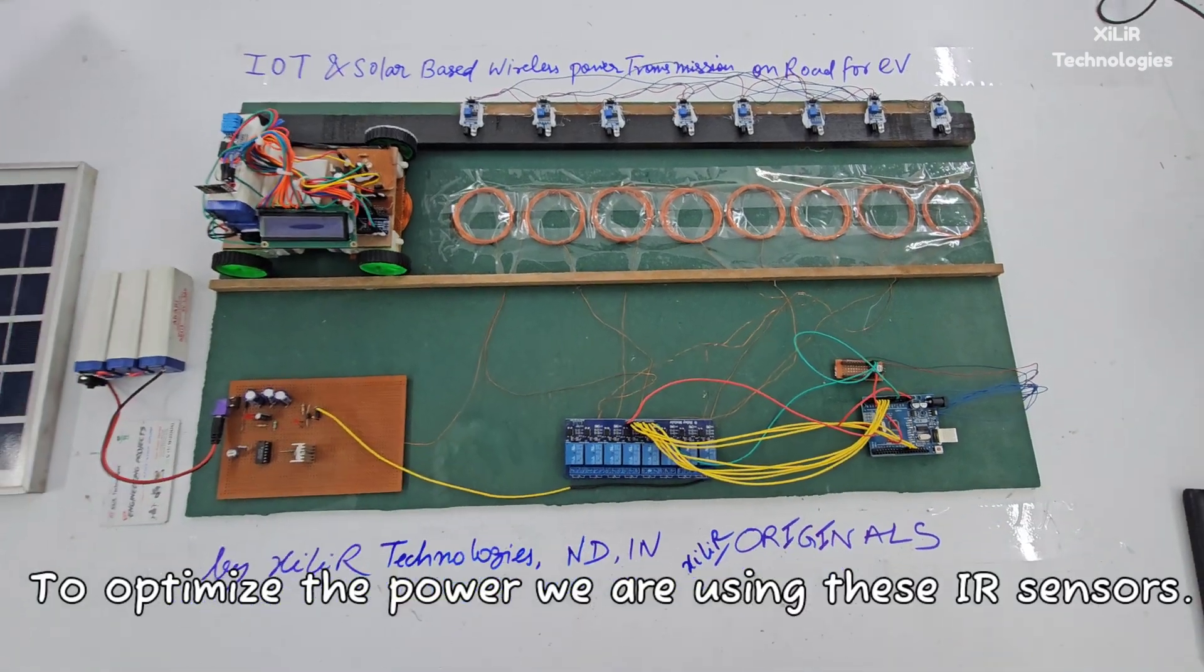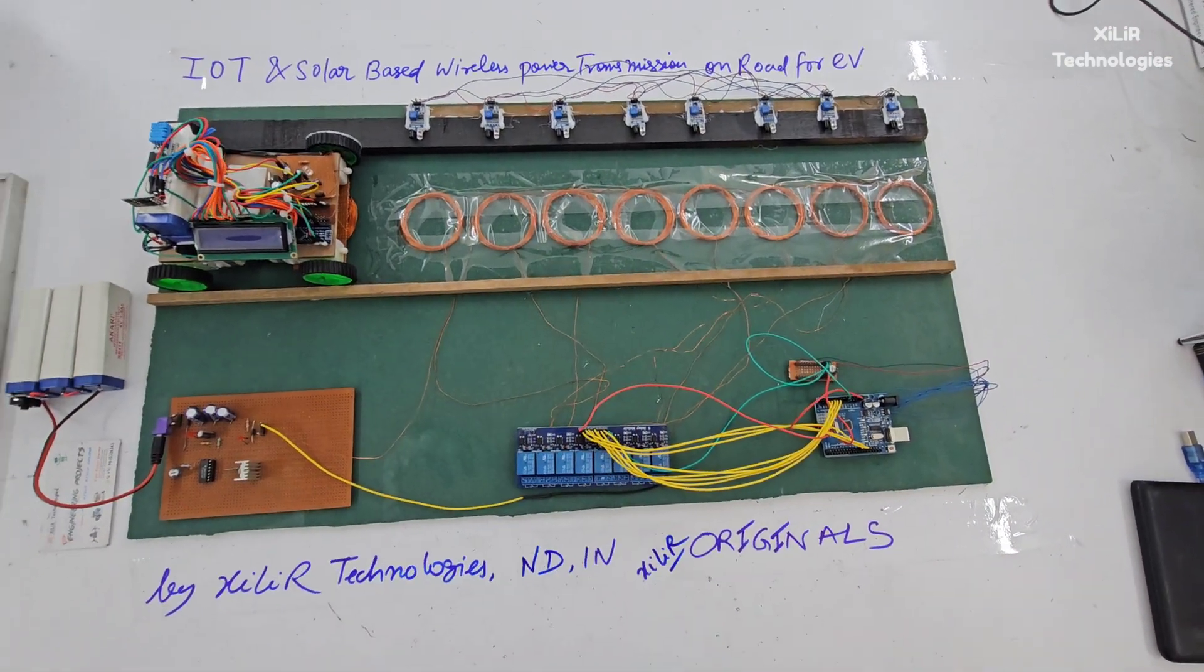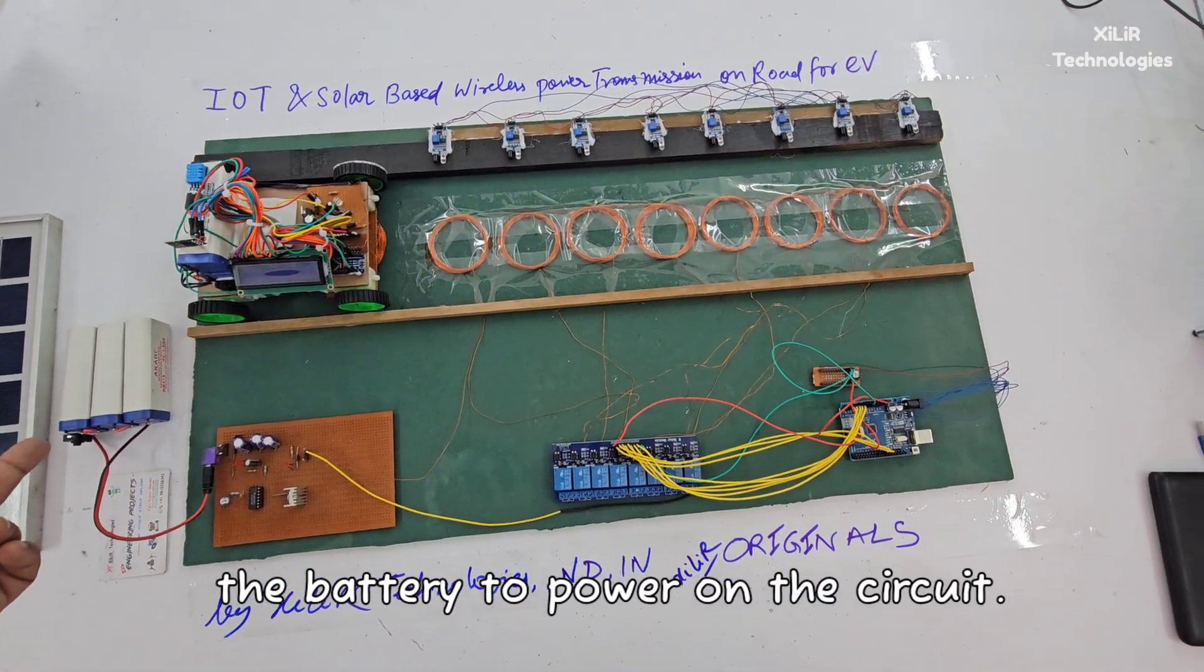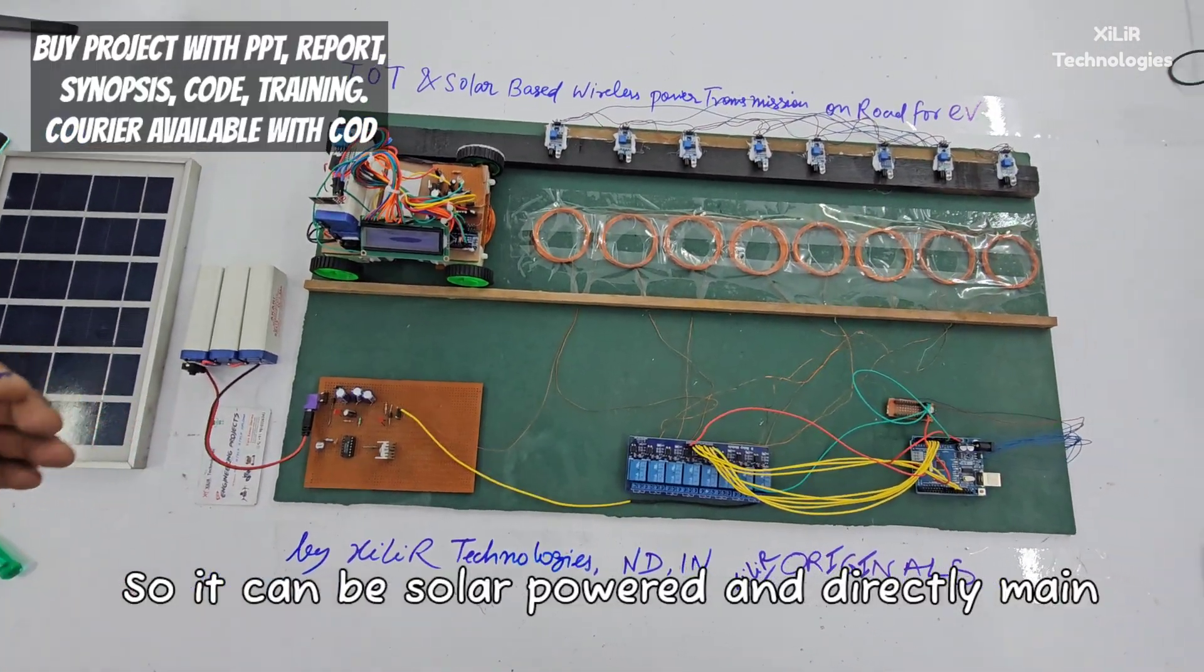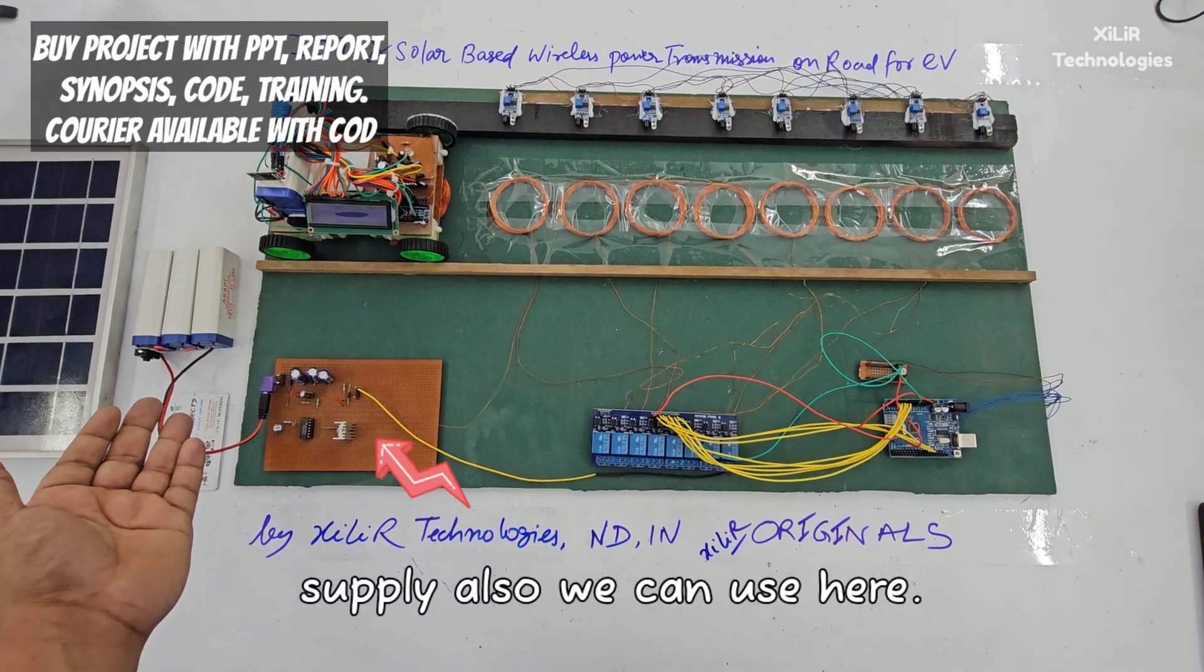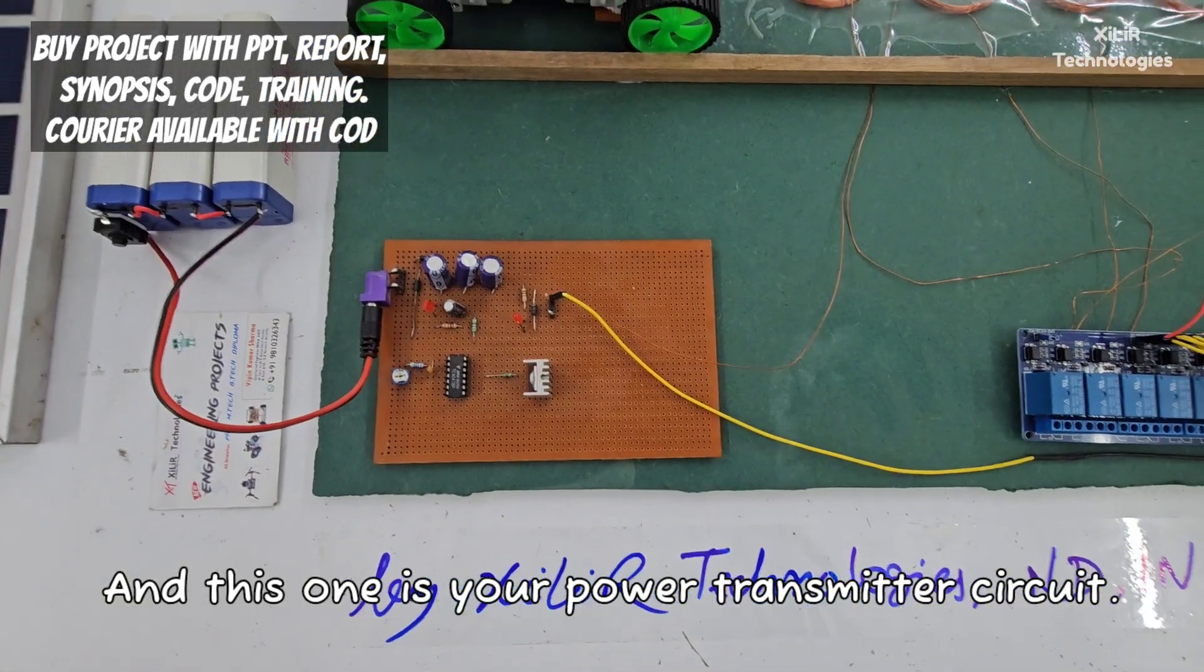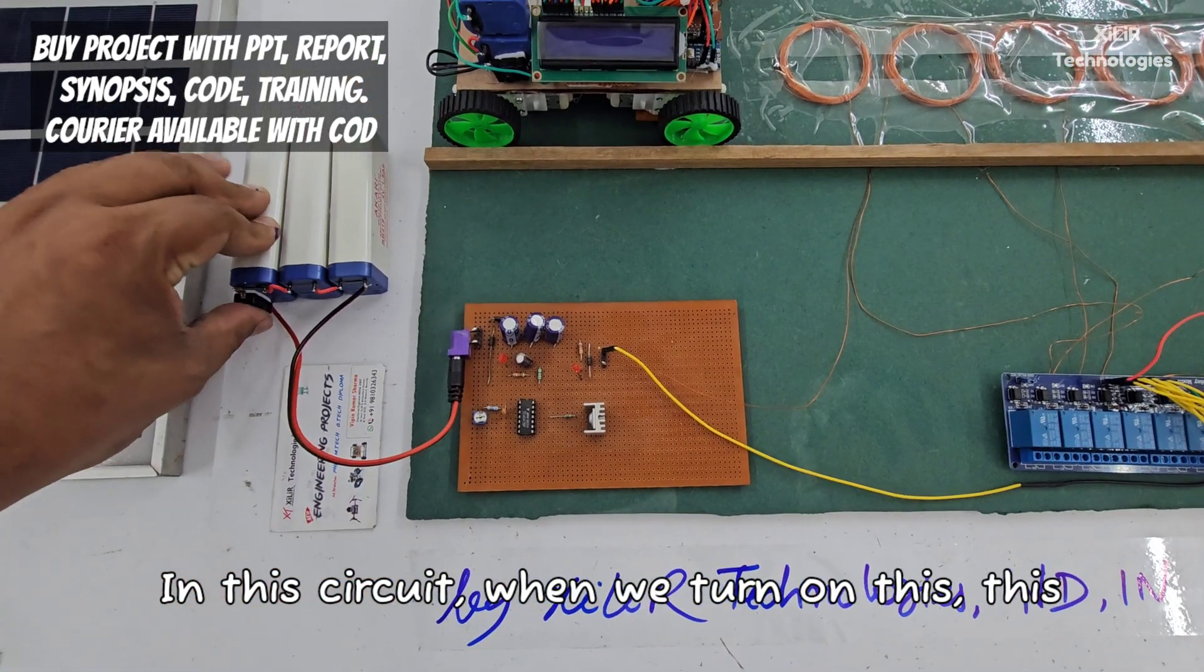To optimize the power we are using these IR sensors. This is a solar panel which will be connected with the battery to power on the circuit, so it can be solar powered. We can also use direct main supply here. This one is your power transmitter circuit.